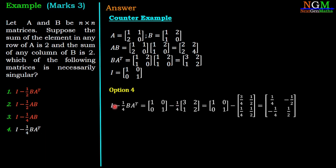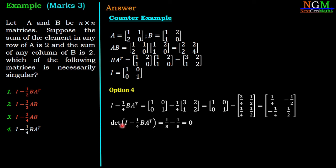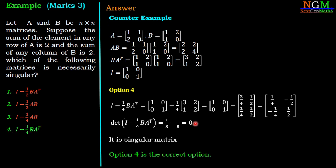Option 4: I minus 1/4 times B into A transpose. So [1 0; 0 1] minus 1/4 times [3 2; 1 2] gives [1/4, -1/2; -1/4, 1/2]. The determinant value is 1/8 minus 1/8 equal to 0. So the determinant of I minus 1/4 times B into A transpose is 0, making it a singular matrix. Therefore option 4 is the correct option.